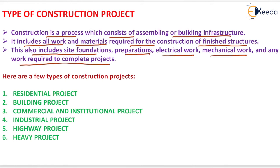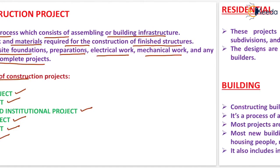Here are a few types of construction projects. The first one is residential project, next one is building project, another one is commercial and institutional project, the next one is industrial project, fifth one is highway project, and the last one is heavy project. Now we will see each and every type of project in detail, starting with the residential project.